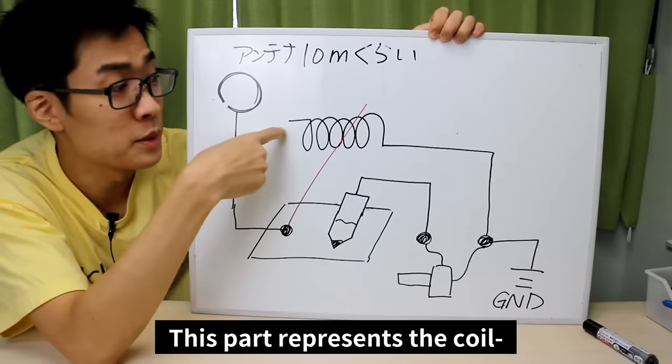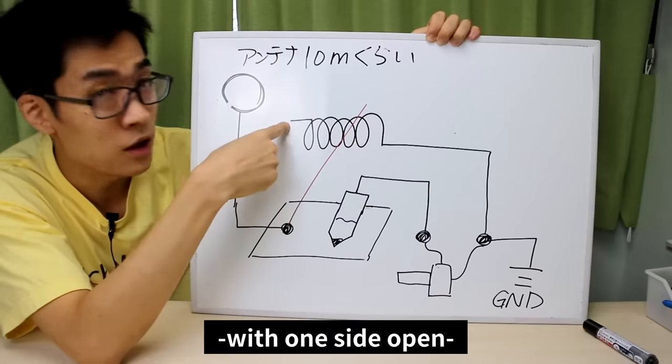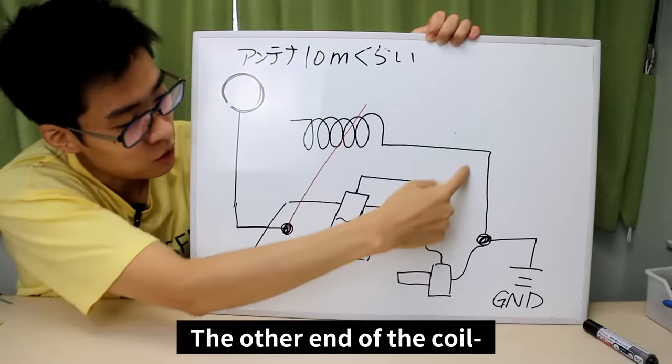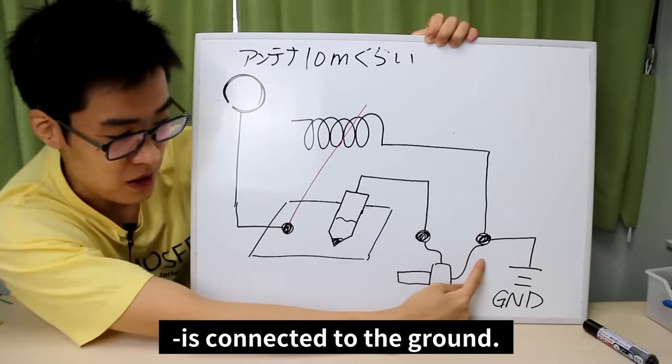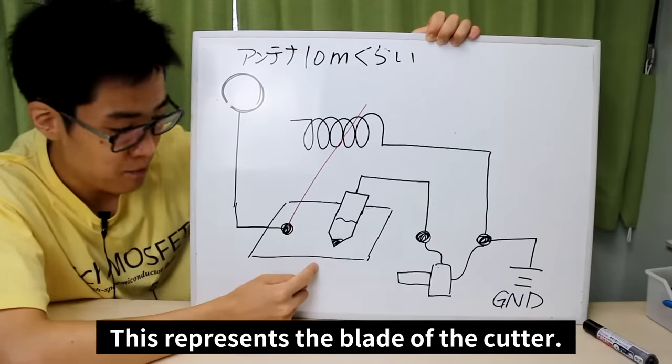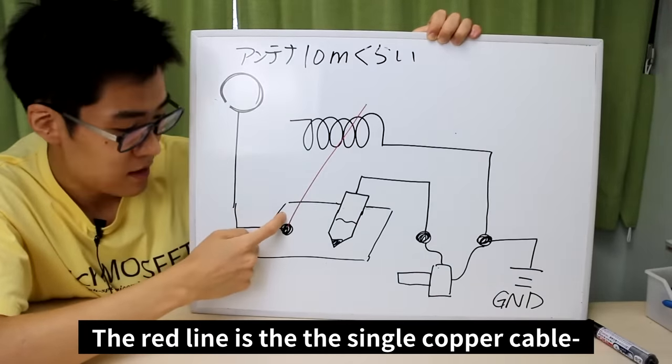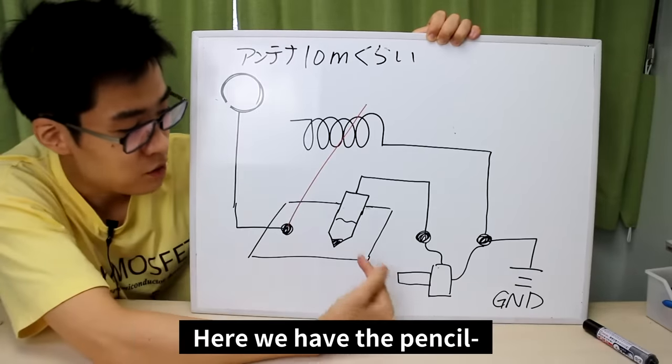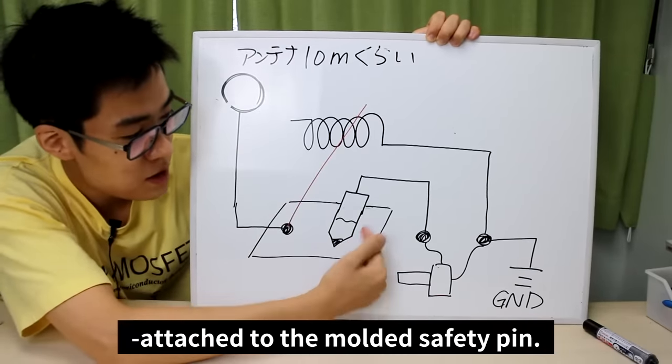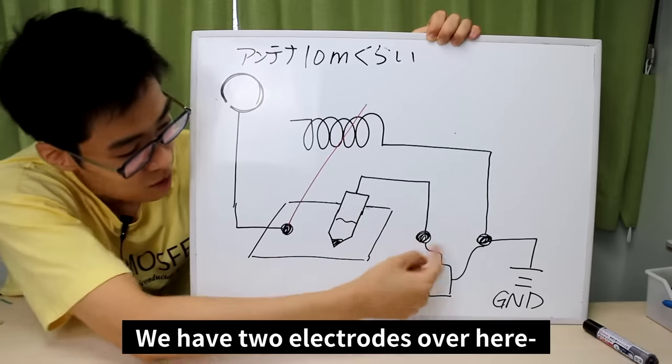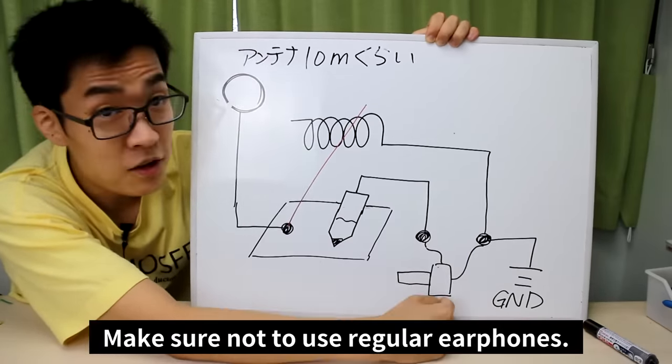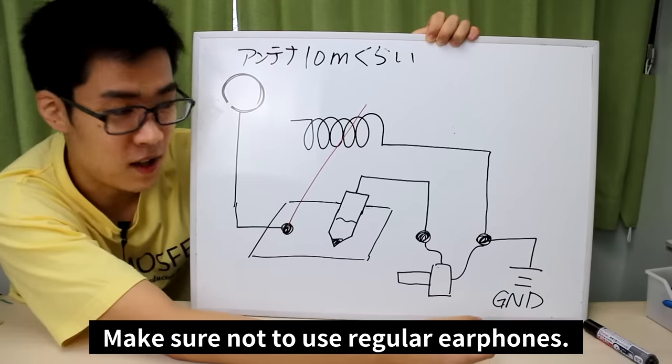This is an illustration of the circuit. This part represents the coil with one side open and disconnected. The other end of the coil is connected to the ground. This represents the blade of the cutter. The red line is the single copper cable and with it attach the antenna. Here we have the pencil attached to the molded safety pin. And we have two electrodes over here attached to the crystal earphones. Make sure not to use regular headphones.